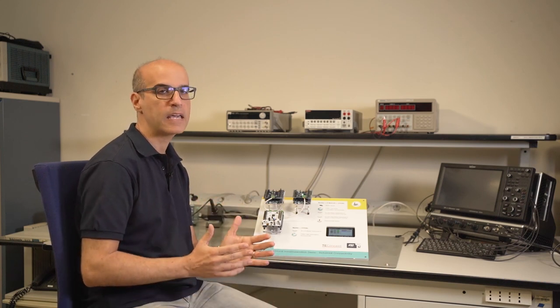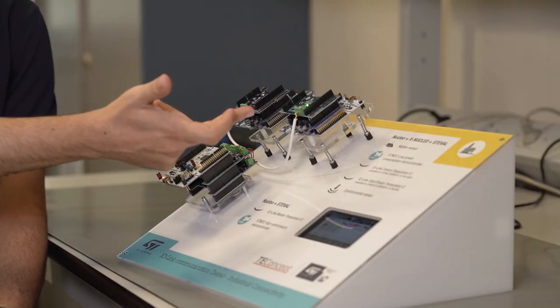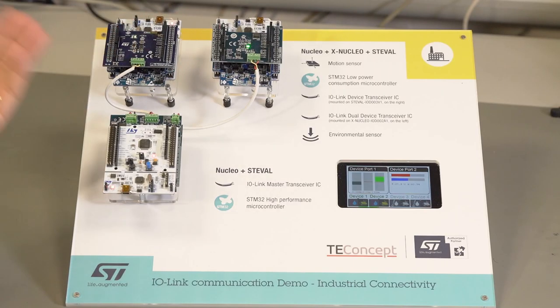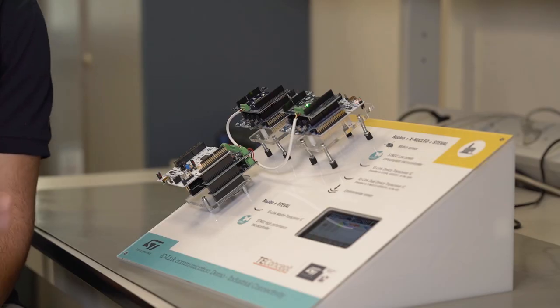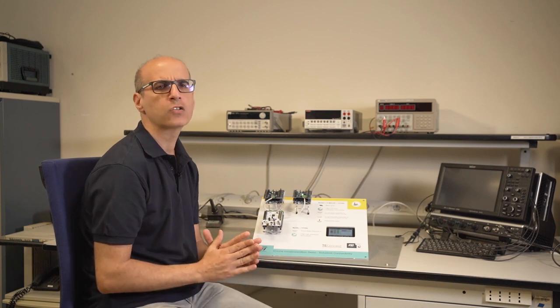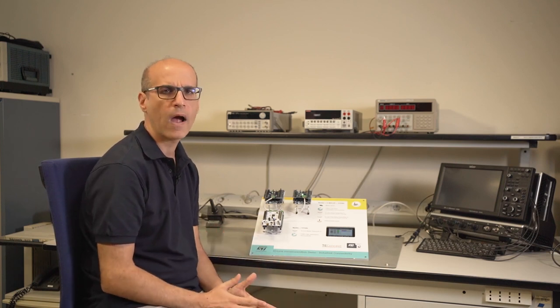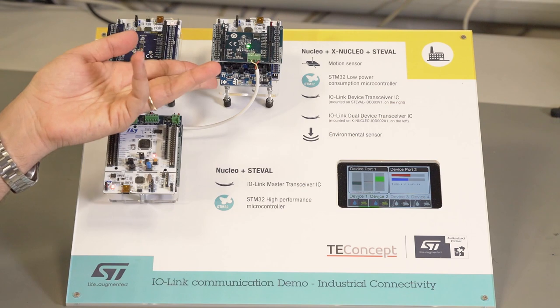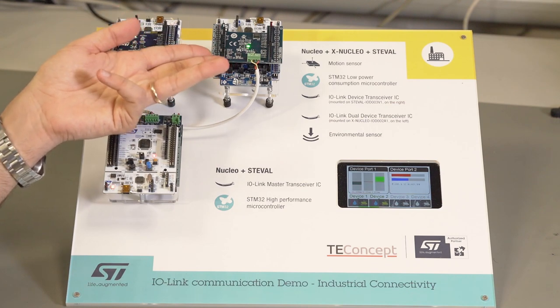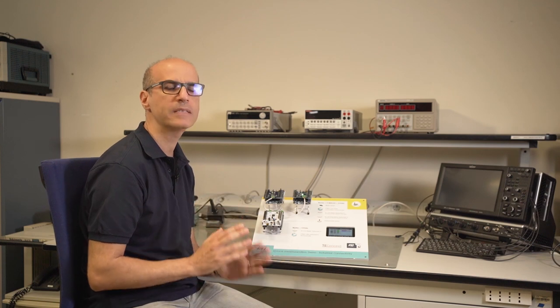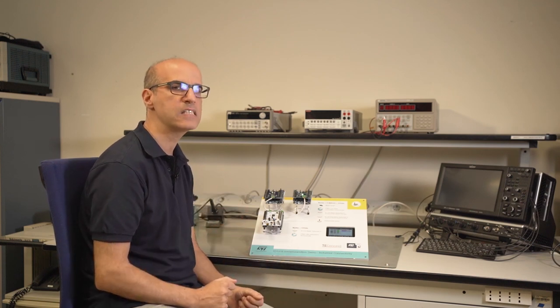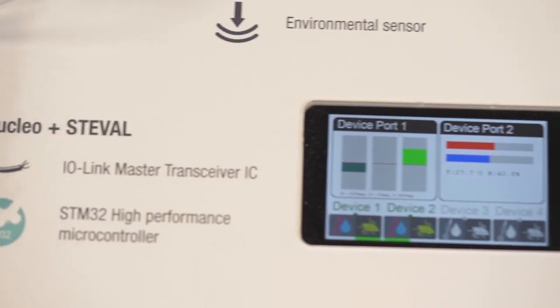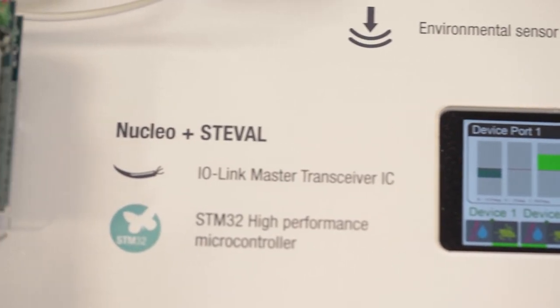Which are here our PNucleo IOD01A1. The PNucleo IOD01A1 includes a microcontroller board Nucleo L073RZ, a sensor board the XNucleo IKS01A1, and the transceiver board the ST-VAL IOD003V1. The microcontroller board runs the software.